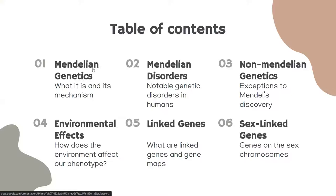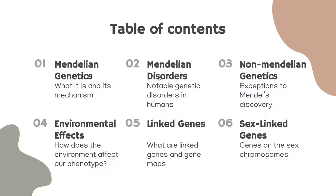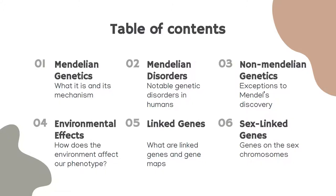Table of contents: number one, Mendelian genetics — what it is and its mechanism; number two, Mendelian disorders — notable genetic disorders in humans; number three, non-Mendelian genetics — exceptions to Mendel's discovery; number four, environmental effects on phenotype; number five, linked genes and gene maps; and number six, sex-linked genes — genes on the sex chromosomes.